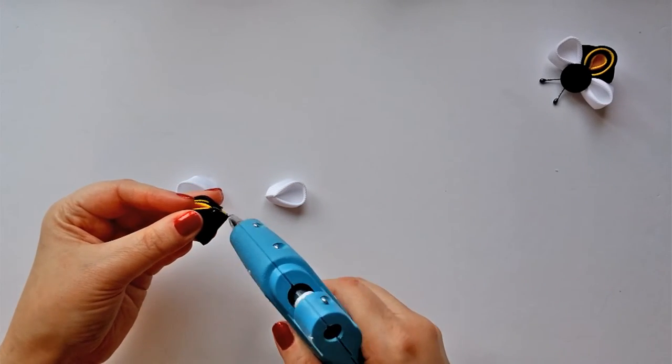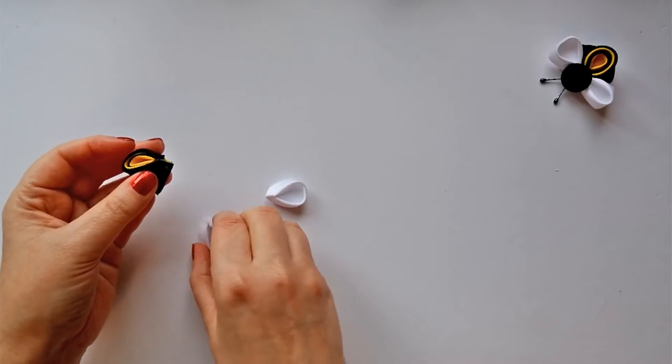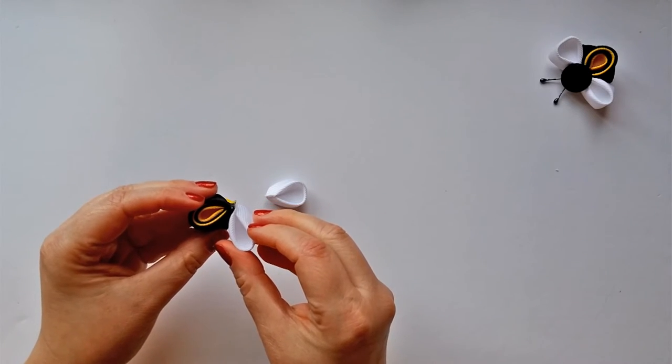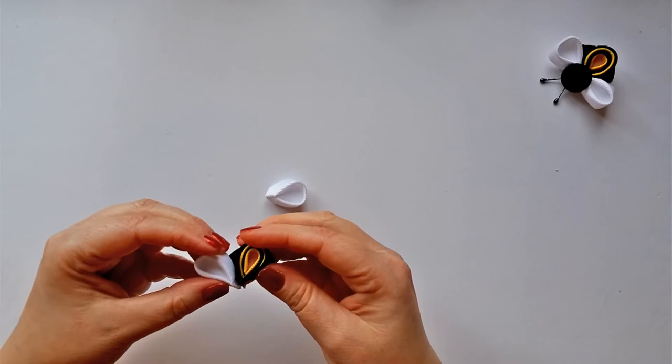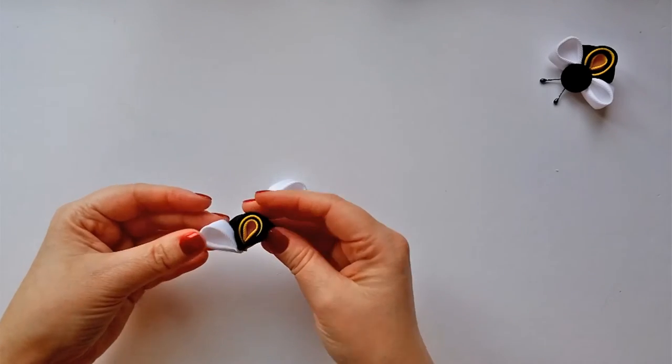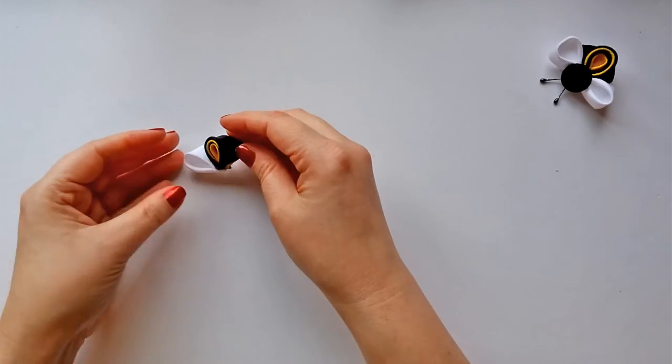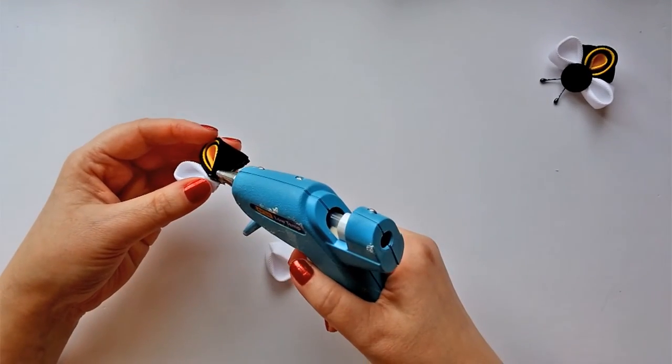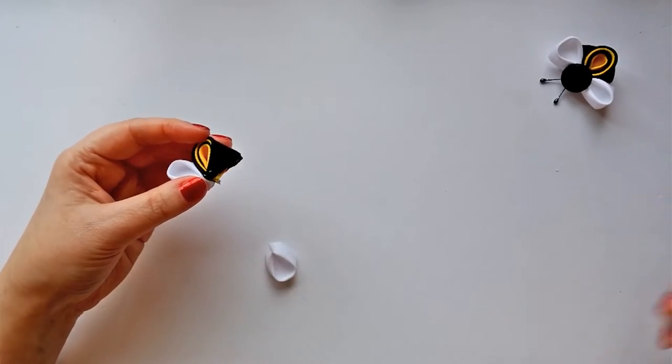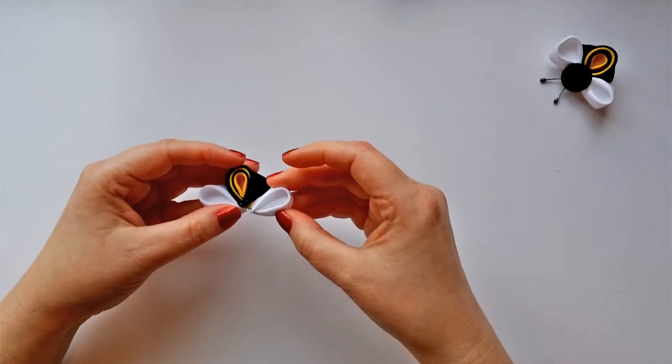Apply a thin line of hot glue to the side of the body close to the end and then attach the side of one of the wings. The edges should line up together in the center. Then repeat that with the other side and the other wing, again making sure that everything is centered and even.